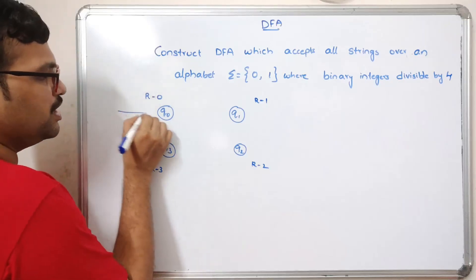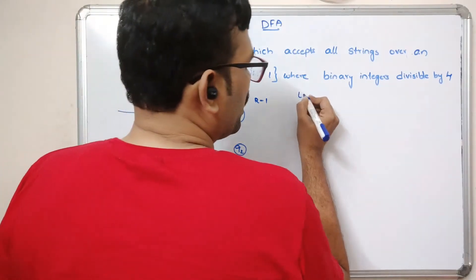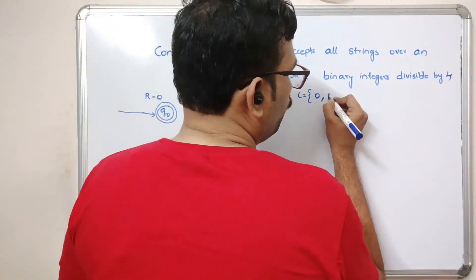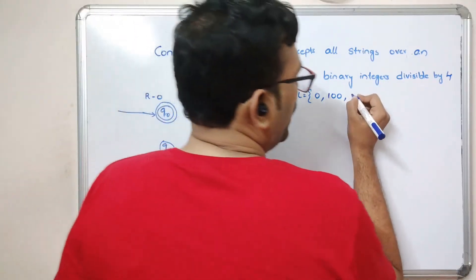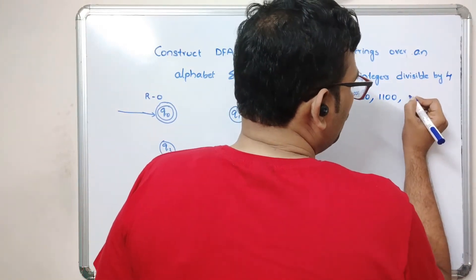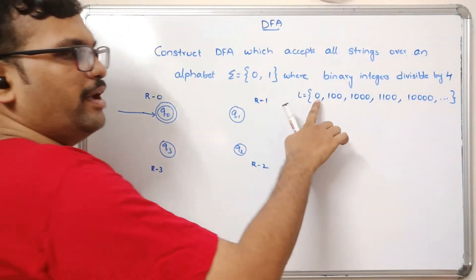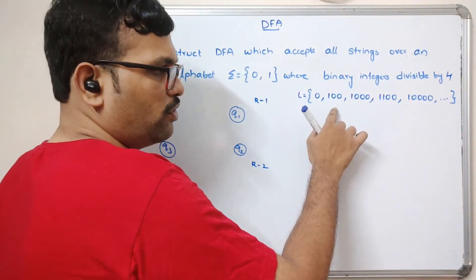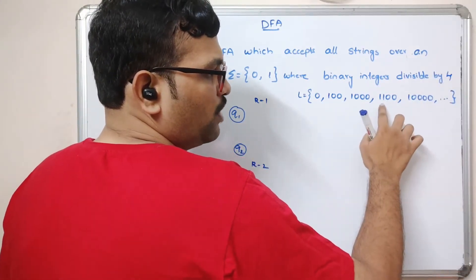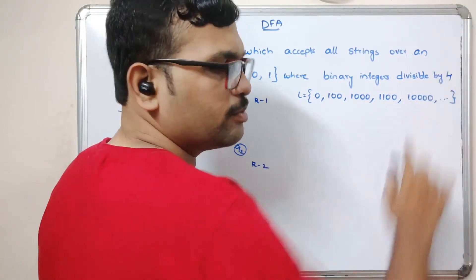Let us write down the language. Numbers divisible by 4: 0 (binary 0), 4 (binary 100), 8 (binary 1000), 12 (binary 1100), 16 (binary 10000), and so on. This is also an infinite language. The binary equivalents of 4, 8, 12, and 16 are all divisible by 4.